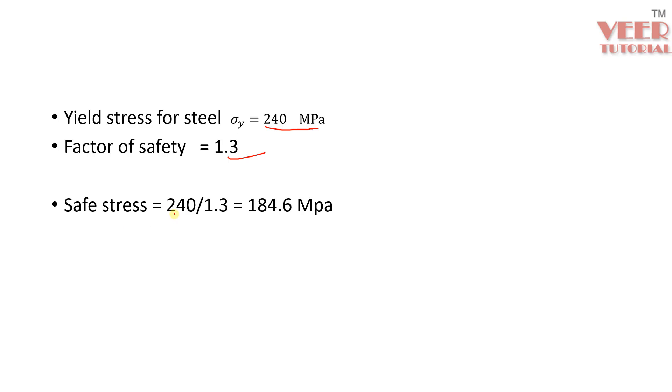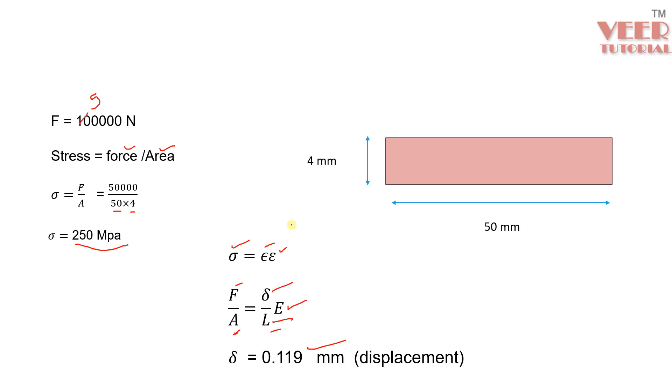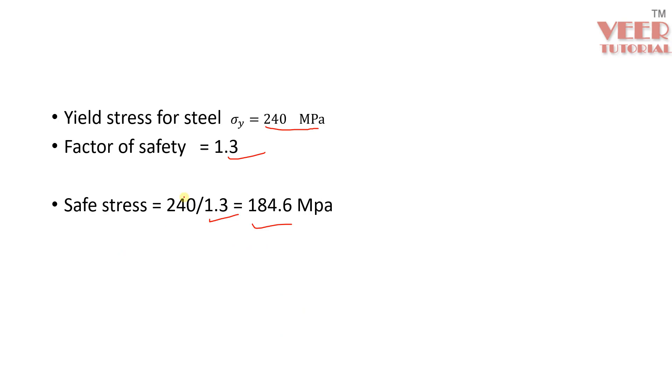So when we consider this factor of safety here 1.3, the safe stress will be 240 divided by 1.3. That will be this value. So here you can see by hand calculations, the value is 250 which is much greater than the safe stress. So we can make a conclusion that the part will break eventually when we apply this load.